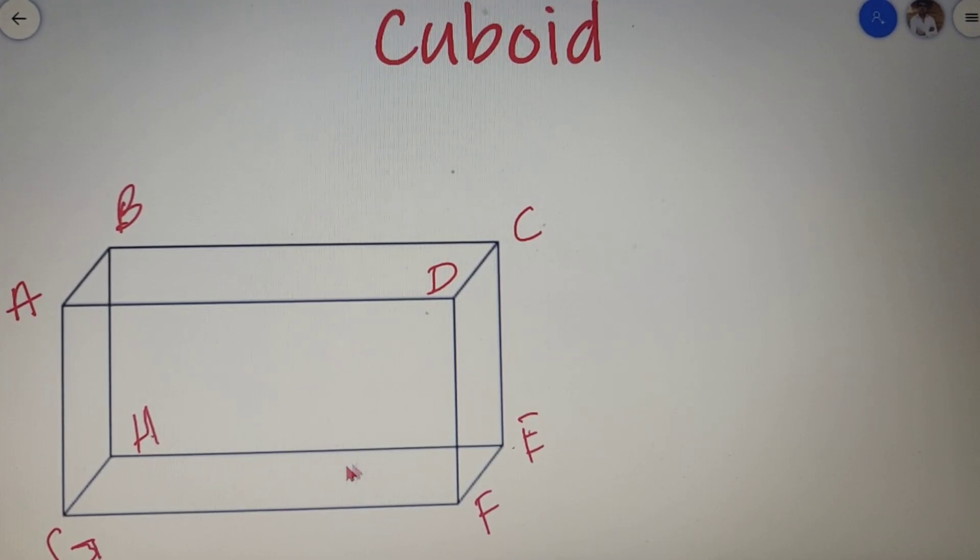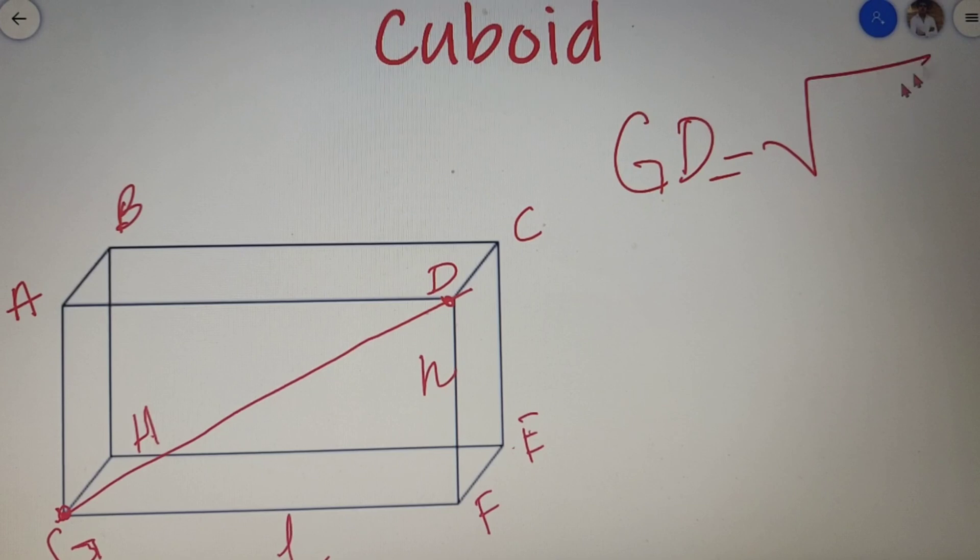The straight line that joins two opposite vertices in the same face of a cuboid is called as the face diagonal of the cuboid. So in the face ADGF, I can say that GD is the face diagonal of the cuboid. Now if DF is the height of the cuboid and GF is the length of the cuboid, then I can say that the length of the face diagonal GD is equal to H square plus L square.